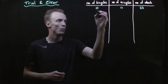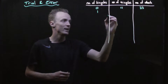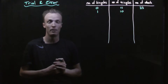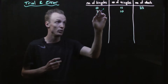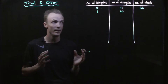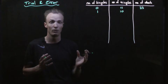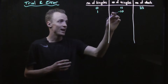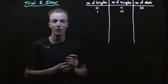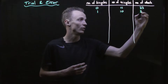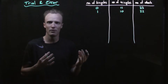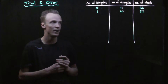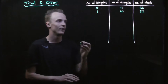What if we tried one bicycle, which would mean there'd need to be 10 tricycles? We multiply the bicycles by 2, giving 2 wheels. We multiply the tricycles by 3, giving 30 wheels. Adding 2 plus 30 gives us 32 wheels. We then repeat this, listing all the combinations until we find the solution we're after. I'm going to go ahead and do this.